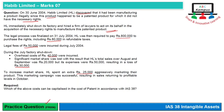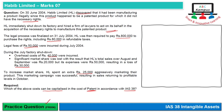To recover market share, HL spent an extra Rs. 25,000 on an aggressive marketing campaign, which successfully returned sales to profitable levels in October. However, the impact of advertising cannot be controlled or directly attributed to the asset, so it cannot be added to the asset's cost and must be expensed in the period incurred. The requirement is to identify which of the above costs can be capitalized in the cost of the patent in accordance with IAS 38.